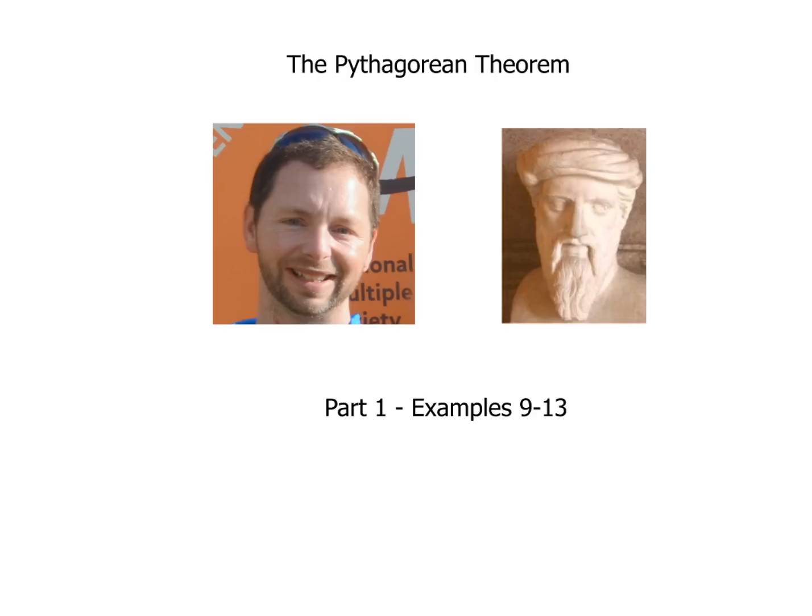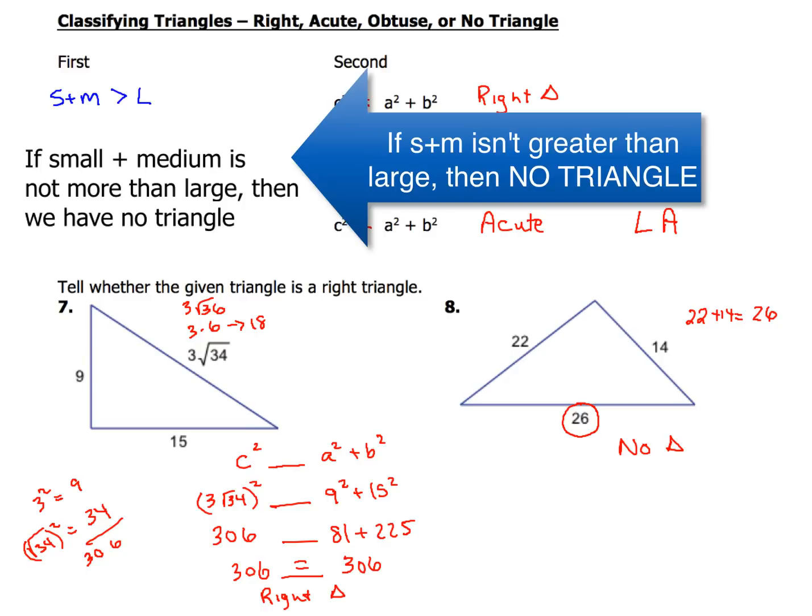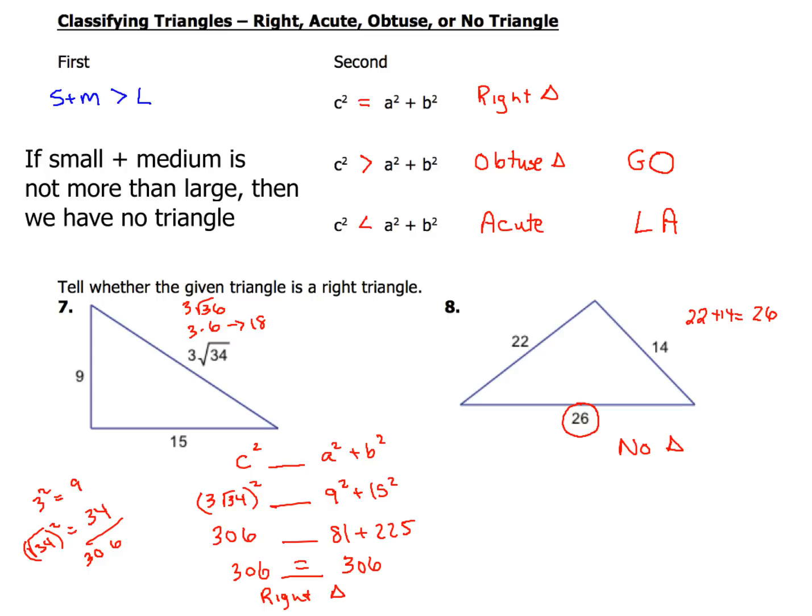We're going to take a look at examples 9 to 13, but before we do that, we've got to go back and revisit the last piece because we're going to need that here. Remember in examples 7 and 8, we had to use the acronym I gave you, go LA, to figure out if it was an obtuse or an acute triangle. Right triangle, we know how to figure that out. But before you do that, remember you've got to double check to be sure that the values we're given are going to be a triangle.